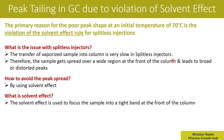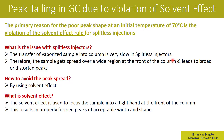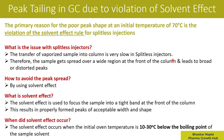The focusing of the sample band very tightly at the very beginning of the column is the purpose of the solvent effect. This results in properly formed peaks of acceptable width and shape. The solvent effect occurs when the initial oven temperature is around or below the boiling point of the sample solvent.